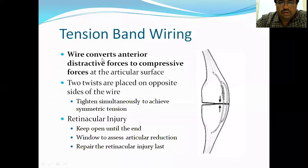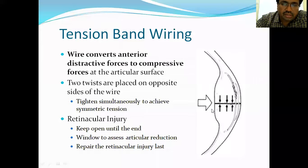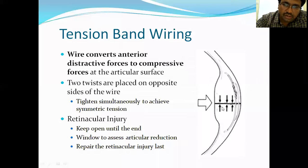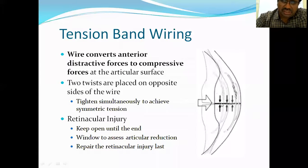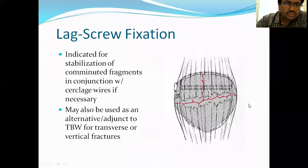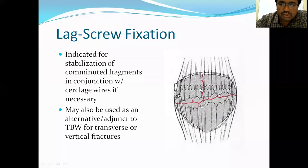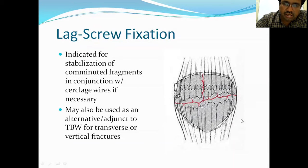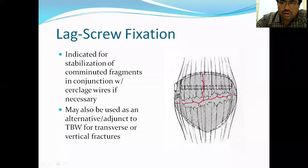It is called tension band wiring because the wire is kept under tension. The wire converts anterior distractive forces into compressive forces on the articular surface. Once tensioning is done, the fracture comes together and is nicely reduced. In lag screw fixation, a lag screw is passed perpendicular to the fracture line, fixing the fragments — this is the main principle of lag screw fixation.